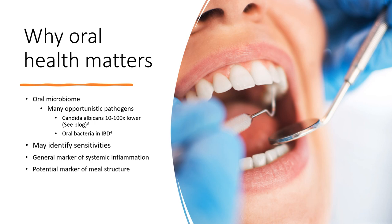Oral health may also identify sensitivities to acidic foods — if you're sensitive in the mouth, there's a chance this causes problems in the esophagus and stomach too. Oral health is also a general marker of systemic inflammation; conditions like cardiovascular disease and type 2 diabetes are marked by systemic inflammation, some of which can originate in the mouth. Additionally, systemic inflammation may promote gingivitis. Oral health is also a potential marker of meal structure — snacking all day can indicate a need to change your diet.